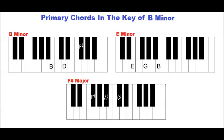The first primary chord is a minor chord. The second is a minor chord. And the third is a major chord. The primary chords in the key of B minor are B minor, E minor, and F-sharp major.